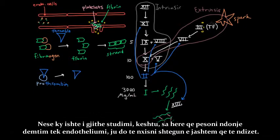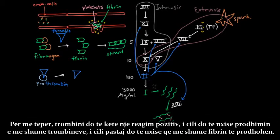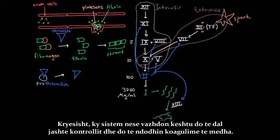And so you would create a little activated 7, you would activate some 10 which would activate some 2 which is thrombin, which would start to create fibrin from fibrinogen. And moreover, the thrombin would have this positive feedback which would cause more and more thrombin to be produced, which would cause more and more fibrin to be produced. And basically this system would just spiral out of control and you would become one large walking clot.